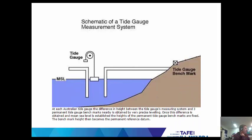Here's a schematic of the tide gauge measuring system. The difference in height between the tide gauge measuring system and three permanent tide gauge benchmarks nearby is obtained by very precise levelling. Once this difference is obtained and mean sea level is established, the heights of the permanent tide gauge benchmarks are fixed, and that benchmark height becomes the permanent reference datum — AHD zero for sea level.